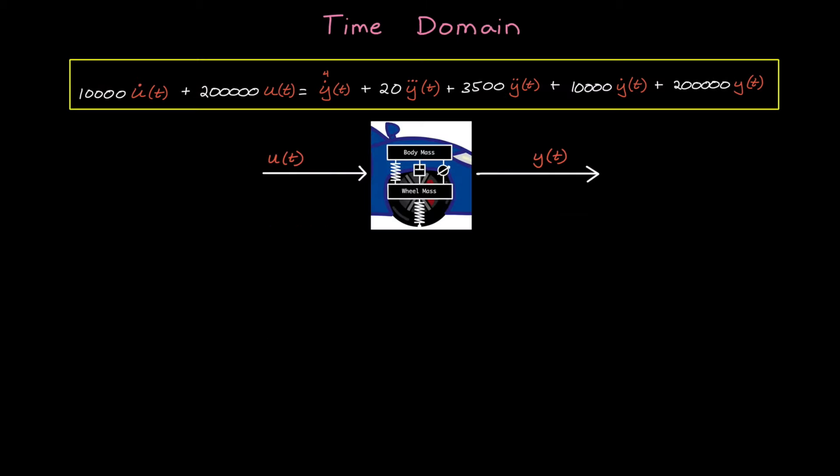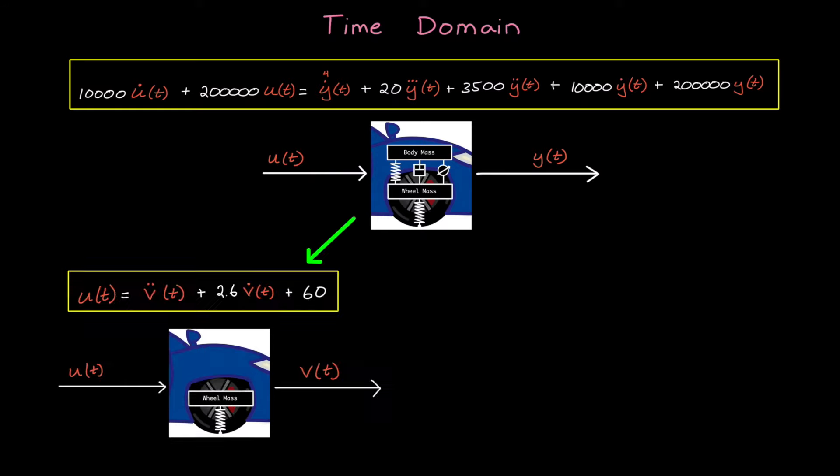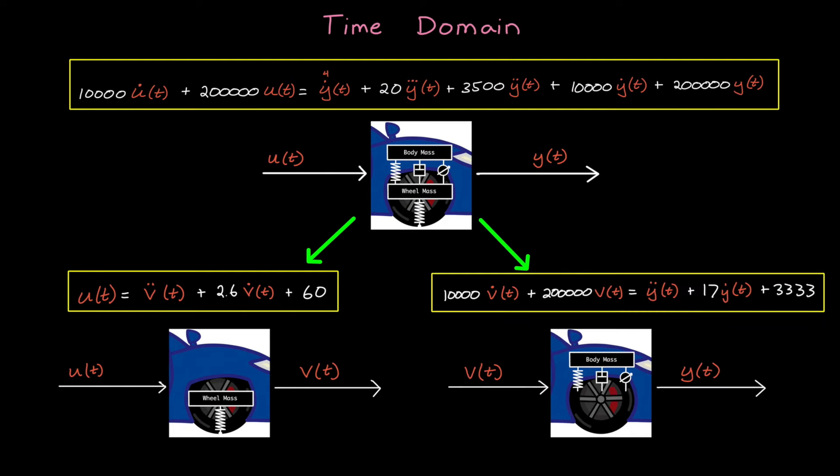Imagine this. Instead of an end-to-end model of the suspension system with a single differential equation, what if we had one differential equation that modeled just the tires, and then another differential equation to model the shocks and the springs? So the output V of t of the first equation is the input to the second. And if we wanted to see how an input u affects the motion of the car y,